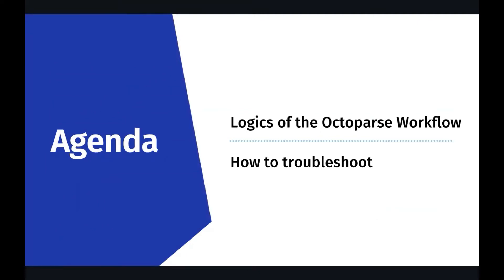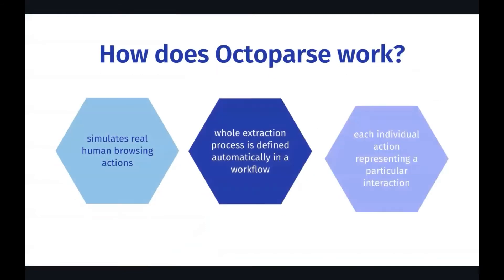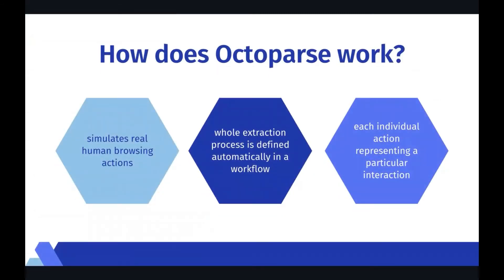So how does Octopus work to extract web data? Octopus works by simulating real human browsing behaviors. Actions like opening web pages, clicking on any elements on the pages, clicking on the next page button, or scrolling down the pages can all be done in Octopus. The simulated scraping process is identical to how you'd access any web data in any everyday browser.